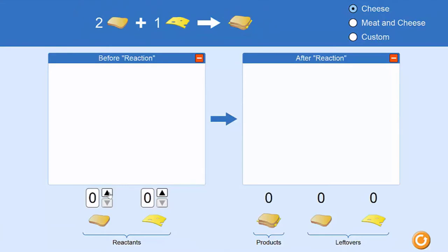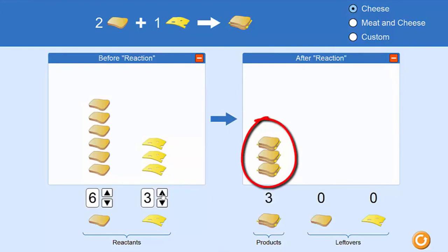So the ratio of bread to cheese reactants is two to one. Here below you can see that we have at the moment exactly that ratio, six slices of bread and three of cheese. And we end up with exactly the number of sandwiches that we expect, three.